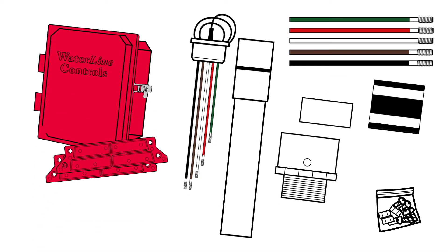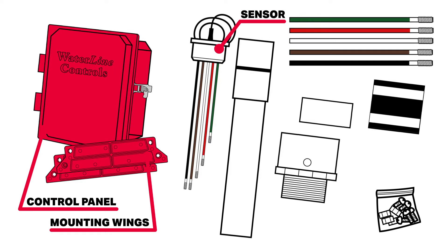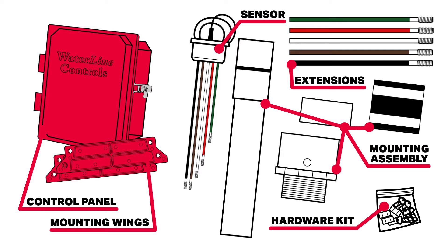Your waterline controls kit includes the panel with two mounting wings, the sensor with 50-foot multi-conductor wire, extension rods that are pre-color-coded, a mounting assembly, and a hardware kit.